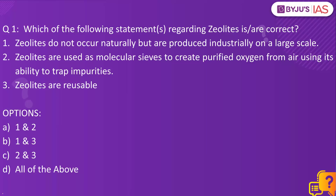Let me know in the comment section what you think is the right answer. Zeolites are basically crystalline solid structures made up of silicon, aluminum and oxygen. They have unique porous properties, and because of these pores they are able to trap impurities. They act as molecular sieves, just like the strainers we use at our homes.